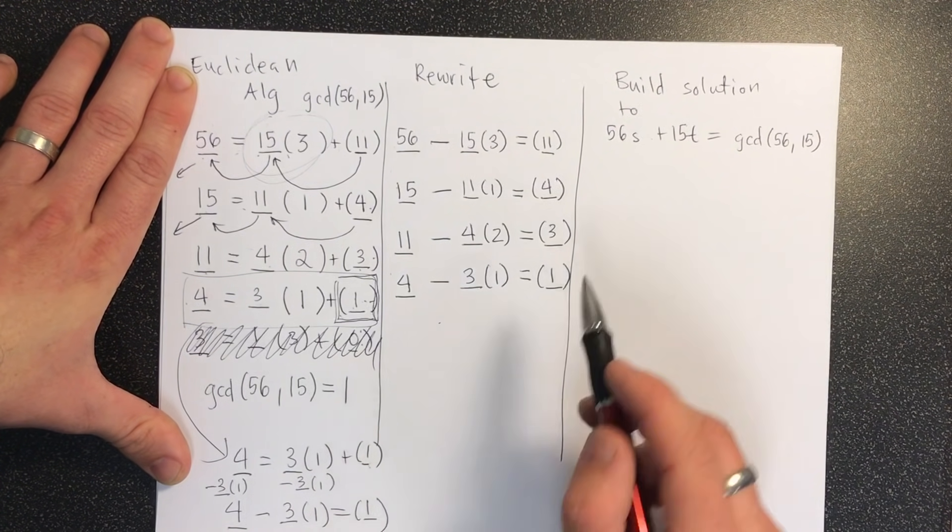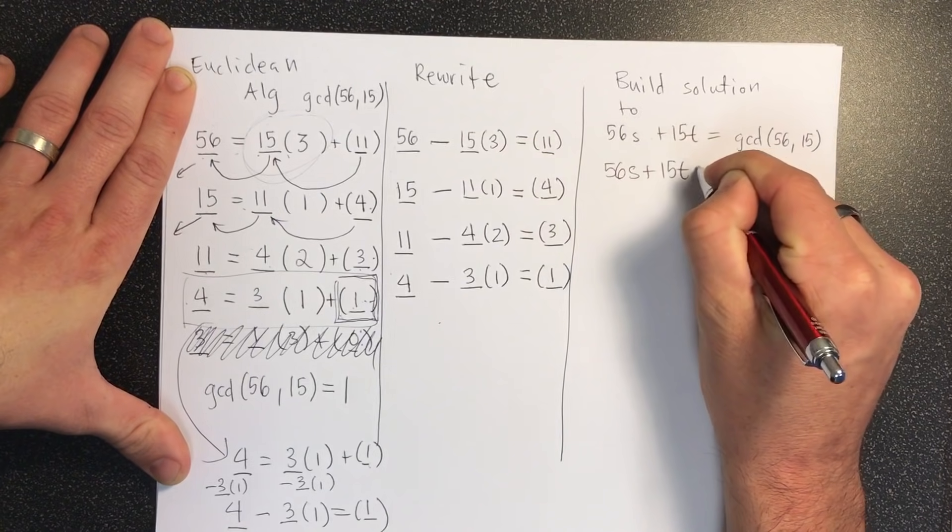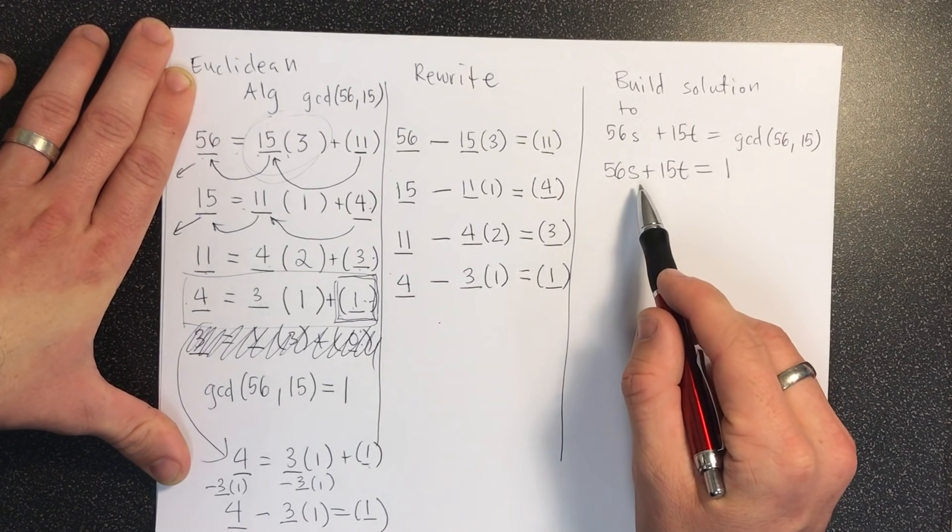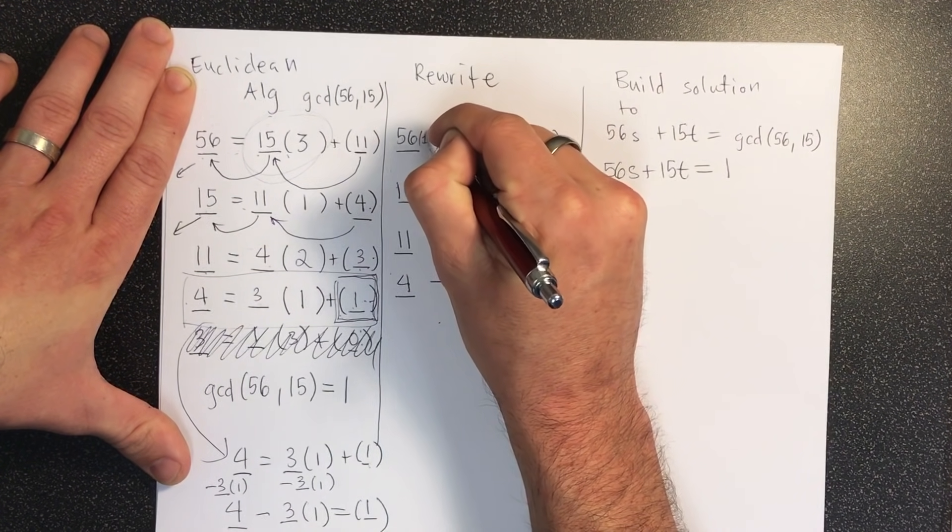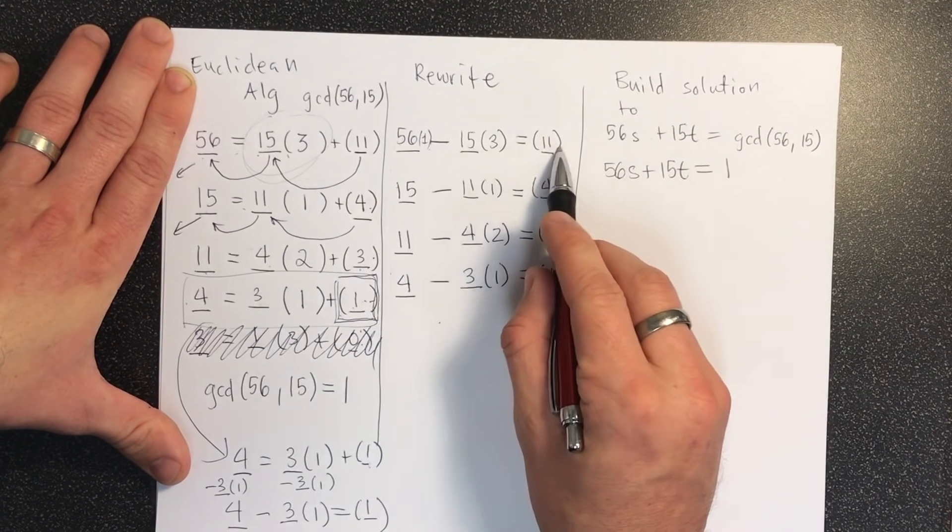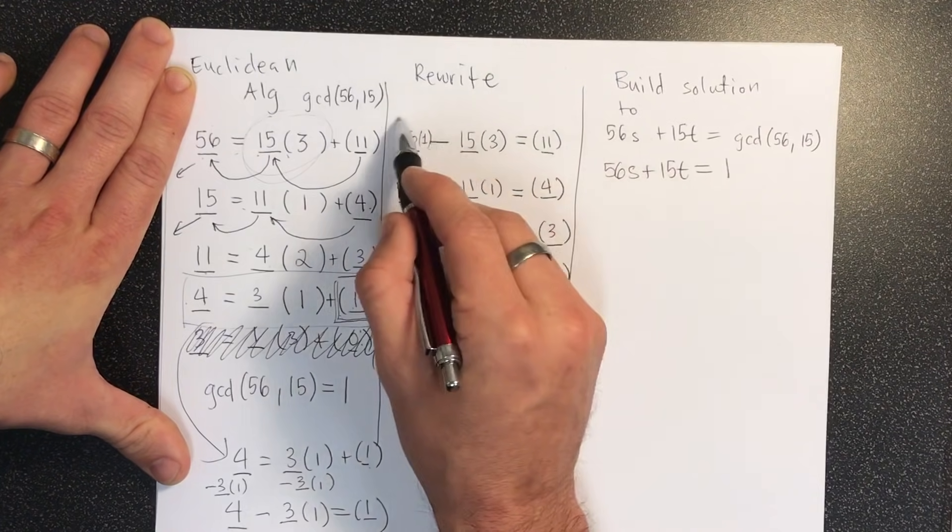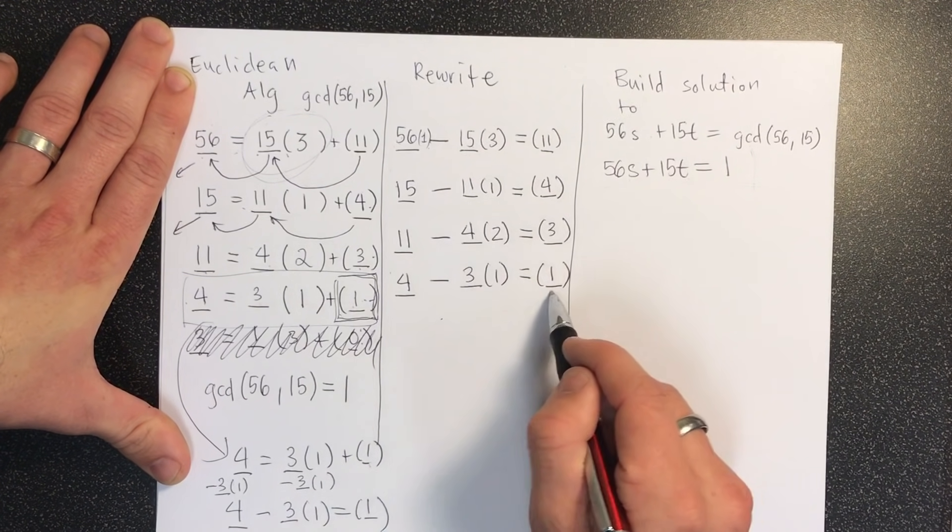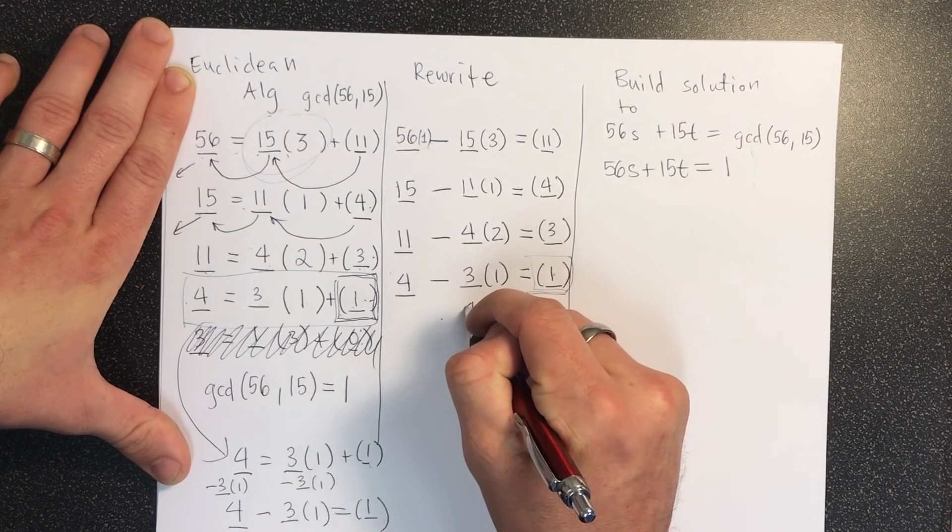So now comes the interesting part. We want—we have the GCD as 1. And by Bezout's theorem, we know that 56s plus 15t equals to 1 has integer solutions for s and t. We would like to find them. So you'll notice that this top line is 56 times something, which is a little implied 1 here, right? We can always say 56 times something. And 15 times something, so it's times a negative 3. The problem is it's equal to the wrong thing. It's equal to 11. So the right side of this first equation isn't correct. It's not getting me what I care about. What I care about is the right side of the last equation. That's the GCD. And so what I'm going to do is I'm going to work backwards.